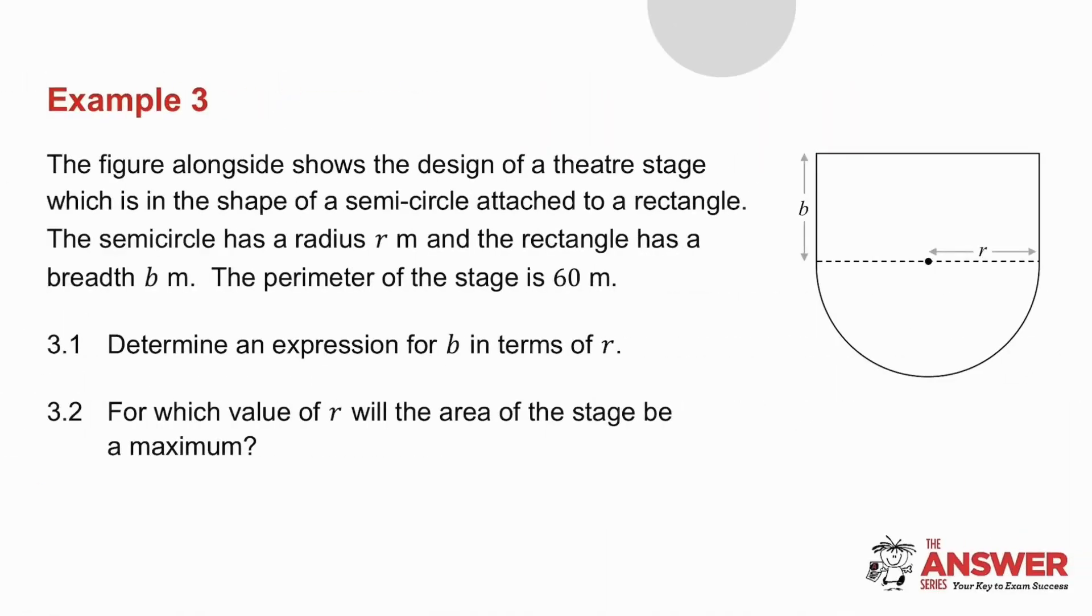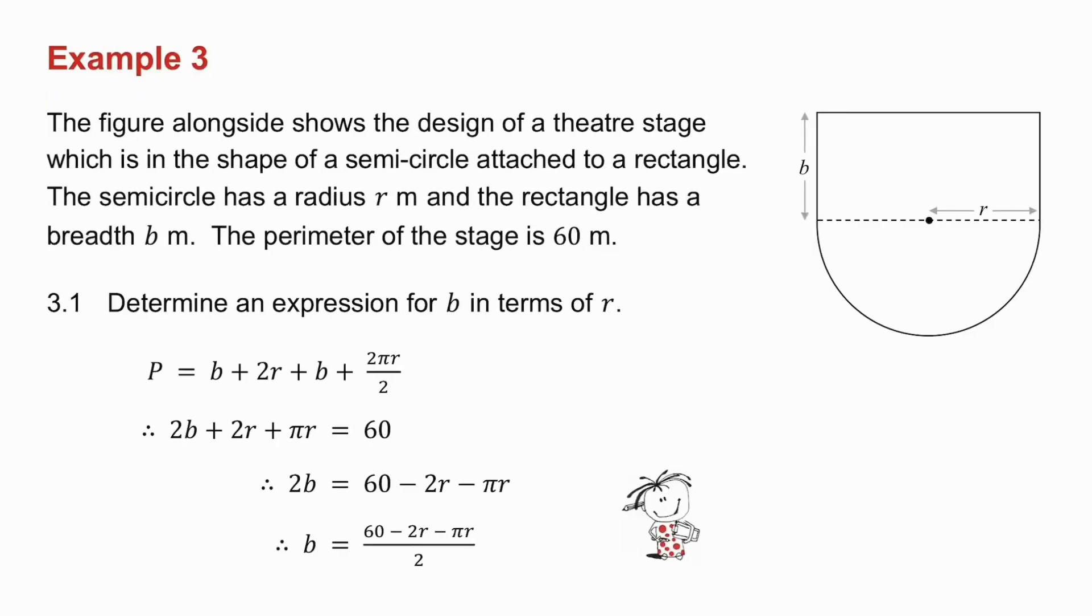Example number three is the optimization question, so I want you to pause the video, try it, and then we'll do it together. The first question asks me to determine an expression for b in terms of r. Now they told me the perimeter of the stage was 60, so to get the perimeter of the stage I've got b, this side, this side is 2r, that side is b...